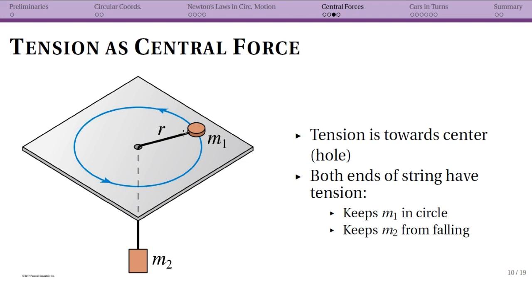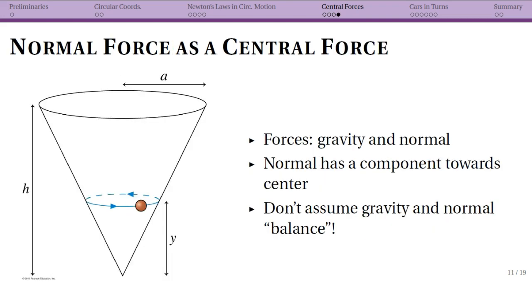Note that if there were friction, this would not be a uniform circular motion problem, because friction is anti-parallel to the instantaneous velocity vector, and uniform circular motion requires no net force in the tangential direction. Another example I really like is normal force being your central force.